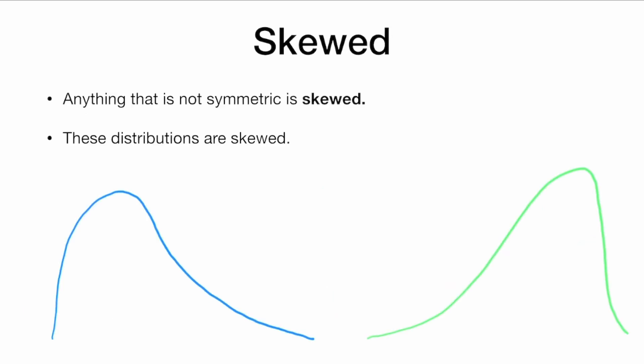And anything that is not symmetric is skewed. So these probability distributions are skewed. We can see that they are not symmetric.